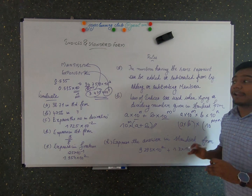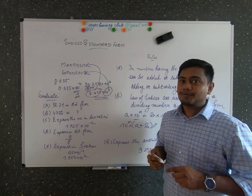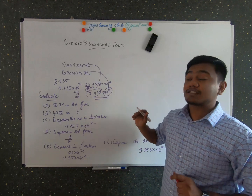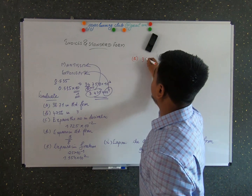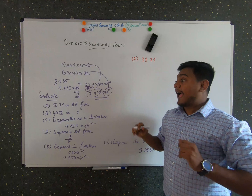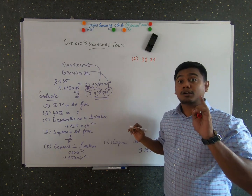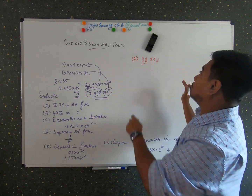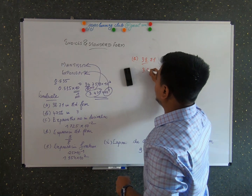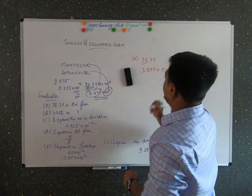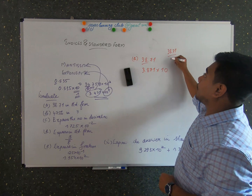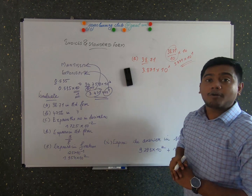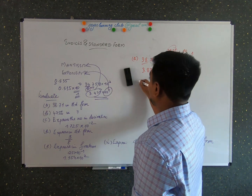Now let's go directly to the tutorial section for standard form. Problem 8a: convert 38.71 into standard form. Recall that standard form requires one number to the left of the decimal point. Here there are two numbers, so we divide by 10, giving 3.871 × 10¹. You multiply and divide by 10 to shift the decimal point, so the answer is 3.871 × 10¹.